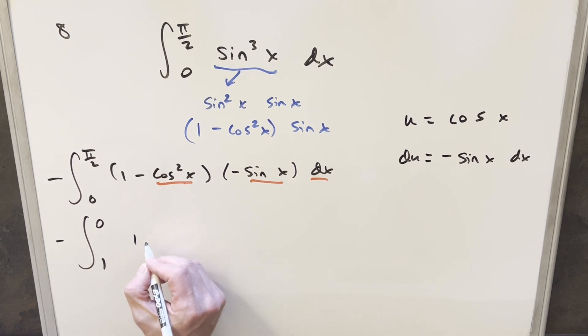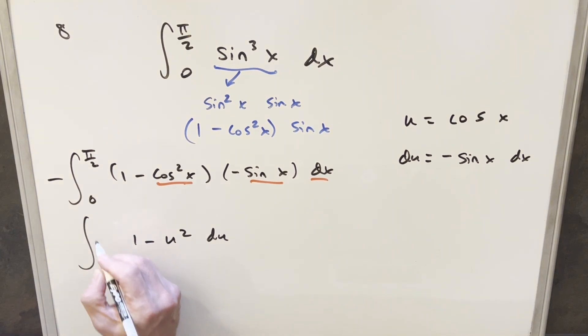Bringing down this piece, it's (1 - u²) du. I'll take the minus sign and use it to swap the bounds, because we want the greater bound to be the upper bound. So we're going from 0 to 1.